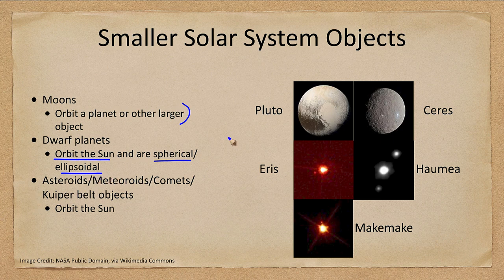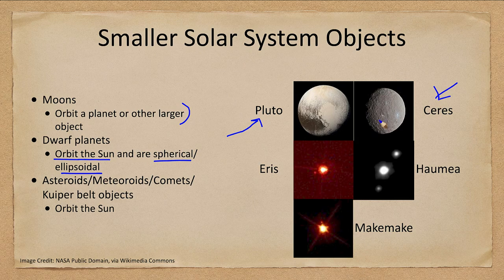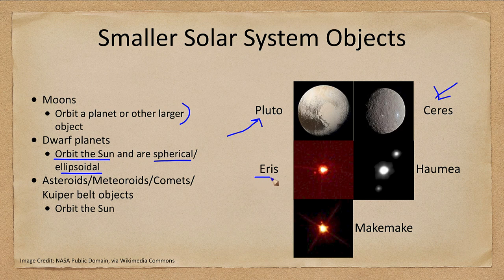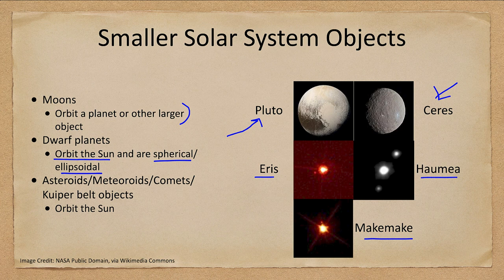So here we see the five known dwarf planets. The best known of those being Pluto and Ceres. And you can see by the images these are the two that we have actually explored. We have had close-up images and have studied these in detail. The other three, Eris, Haumea, and Makemake have not been explored in detail. And we see them only as we can see them from Earth as blobs of light.